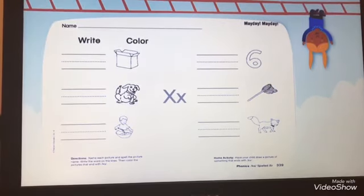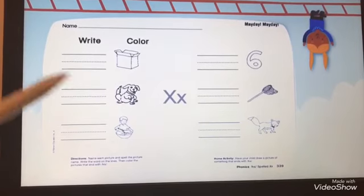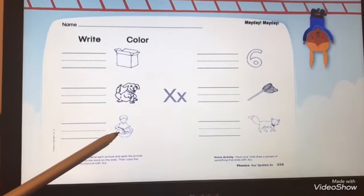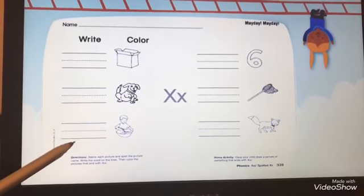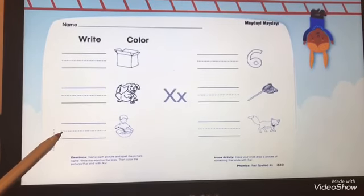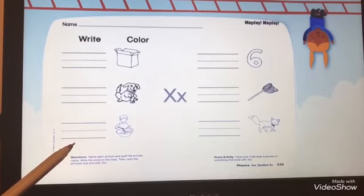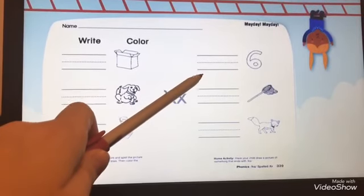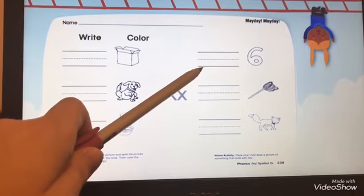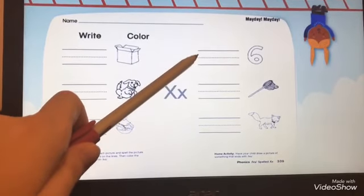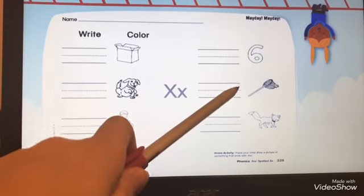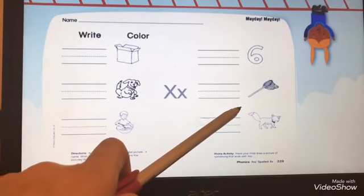Now look at the boy, what is he doing? He mixes. Mixes. Now write here please: M, I, X. Mix. Now look at here, what is this? It's six. Very good! Now write: S, I, X. Six. Okay.